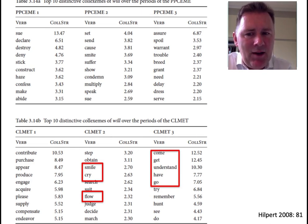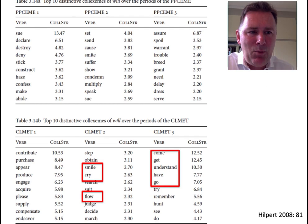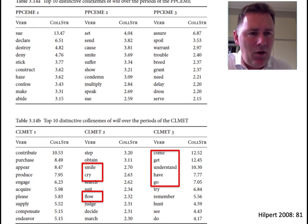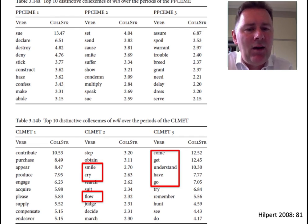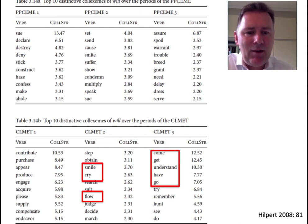Collostructional analysis necessarily focuses on the most strongly attracted elements — it shows you the tip of the semantic iceberg. Naturally there's much more going on, and we would like to understand how the entire semantic spectrum of a construction changes over time. This requires a different approach, namely one that takes an entire paradigm of constructions into view.